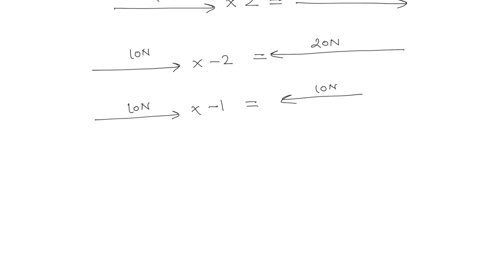That resulting vector is the negative of the original vector. If the first vector is represented as A, then vector B is the negative of vector A, or vector A is the negative of vector B. Two vectors are said to be negative vectors if they have the same magnitude but opposite direction.